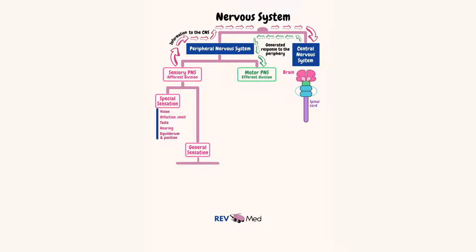Now let's get basic. General sensations are divided into two: the somatic sensations from the superficial parts of the body, like pain, temperature, touch, vibration, and proprioception; and the visceral deep sensations, like dull pain and distention of the organs.